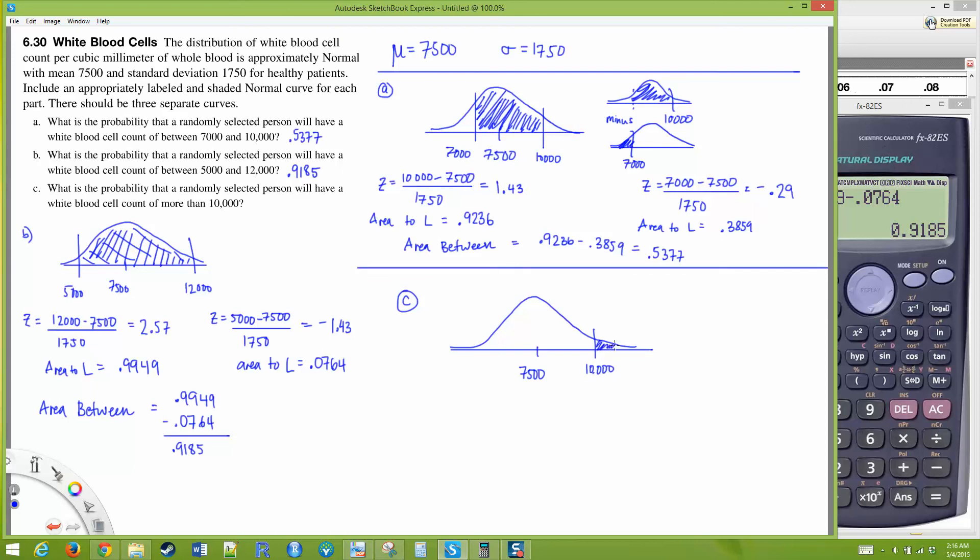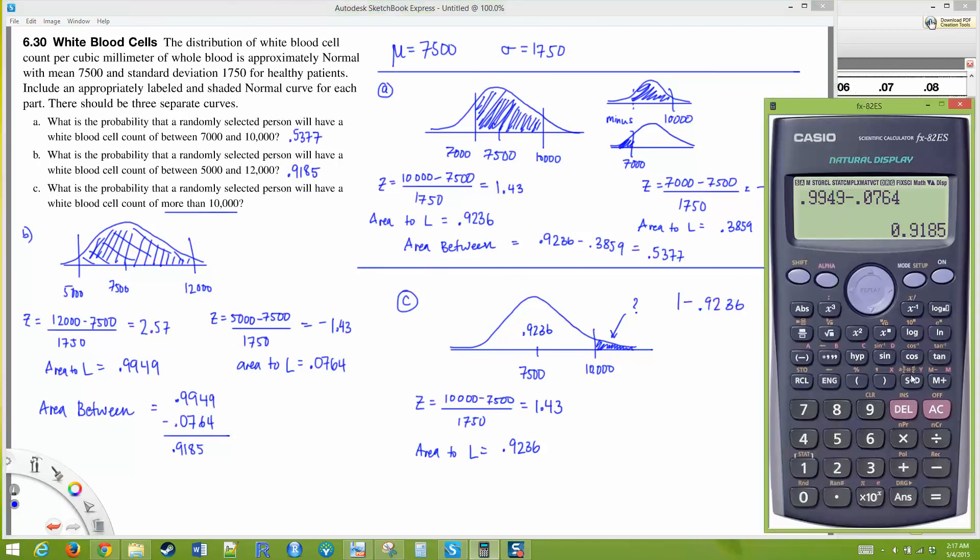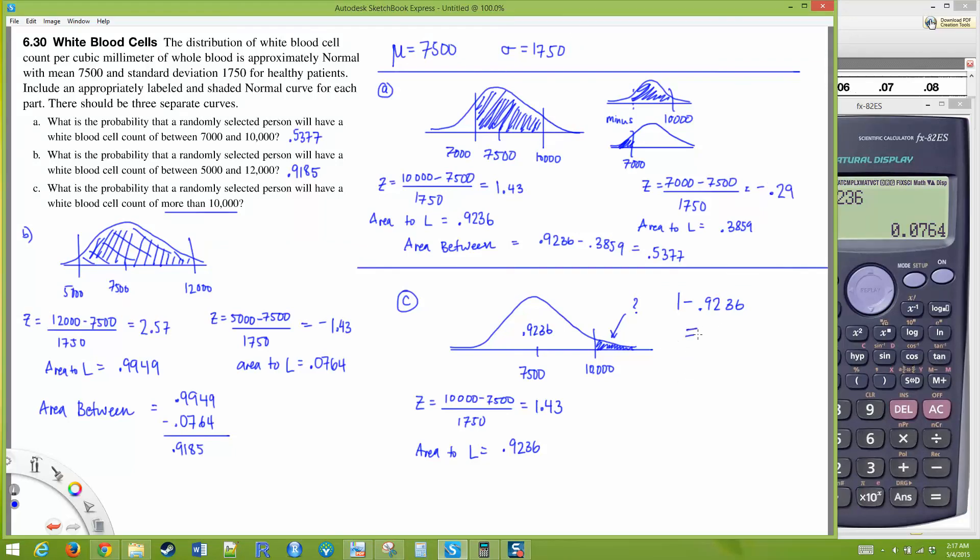Here we're just looking for the area to the right. We've already calculated the z score for 10,000—it's positive 1.43. When we look that up in the table, the area to the left was 0.9236, but we want the area to the right because it's saying more than 10,000. So we do 1 minus 0.9236, which equals 0.0764. That's our answer to this problem.